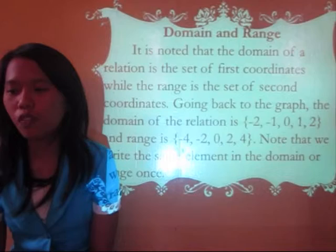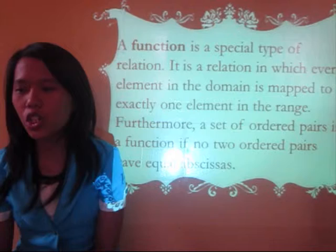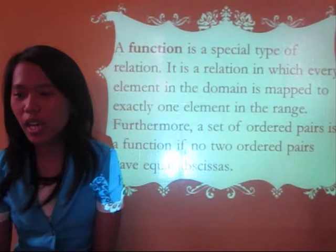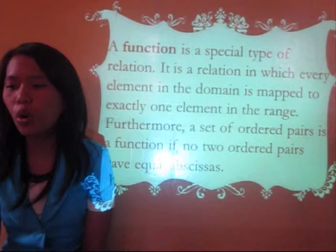Note that we write the same element in the domain or range only once. A function is a special type of relation. It is a relation in which every element in the domain is mapped to exactly one element in the range. Furthermore, a set of ordered pairs is a function if no two ordered pairs have equal abscissas.